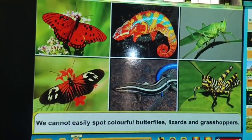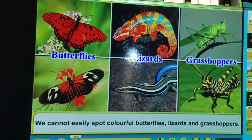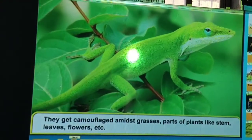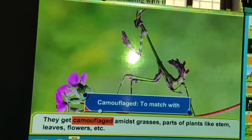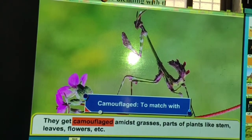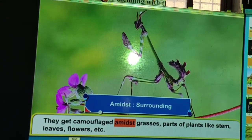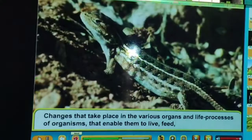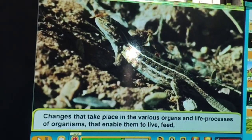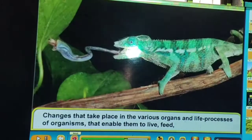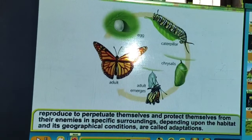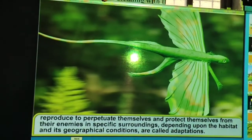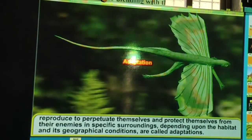We cannot easily spot colorful butterflies, lizards and grasshoppers — they get camouflaged amidst grasses because their colors blend with those of their surroundings. Changes that take place in the various organs and life processes of organisms that enable them to live, feed, reproduce, protect themselves from enemies in their specific surroundings depending upon habitat and geographical conditions are called adaptations.